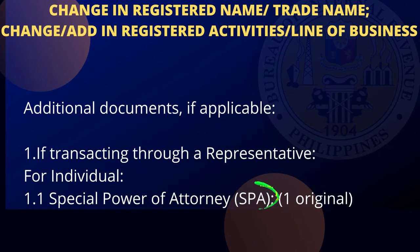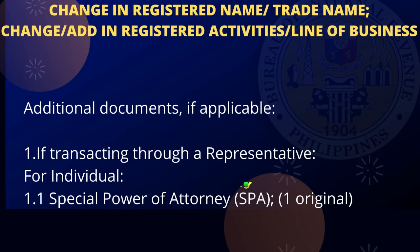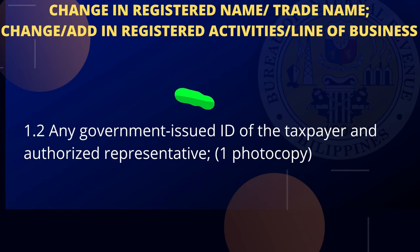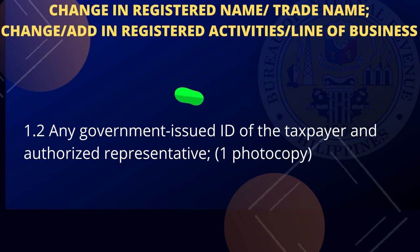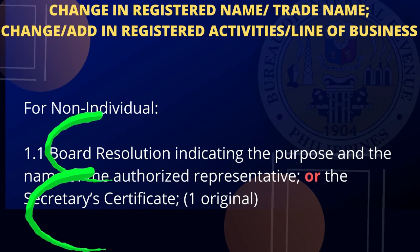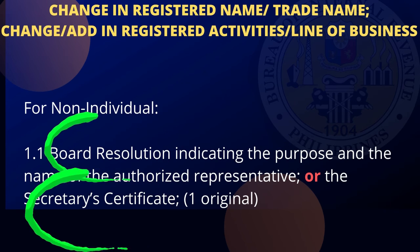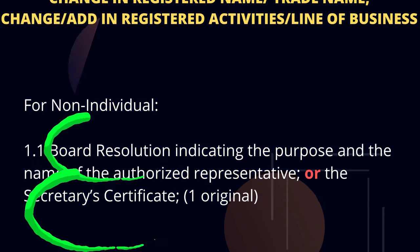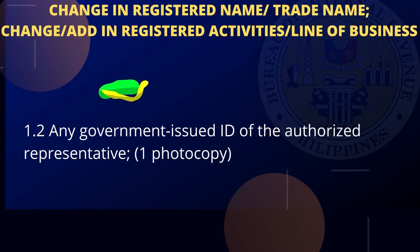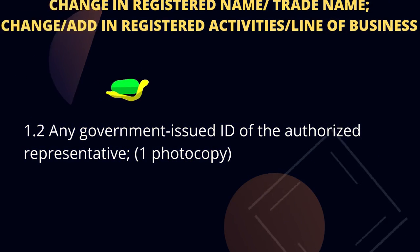Additional documents if applicable — for individual: special power of attorney, one original; any government-issued ID of the taxpayer and authorized representative, one photocopy. For non-individual: board resolution indicating the purpose and the name of the authorized representative, or secretary's certificate, one original; any government-issued ID of the authorized representative, one photocopy.